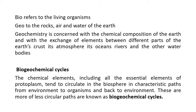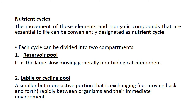The chemical elements, including all the essential elements of protoplasm, tend to circulate in the biosphere in characteristic paths from environment to organisms and back to the environment. These are more or less circular paths and they are known as biogeochemical cycles. The movement of those elements in organic compounds that are essential to life can be conveniently designated as a nutrient cycle.